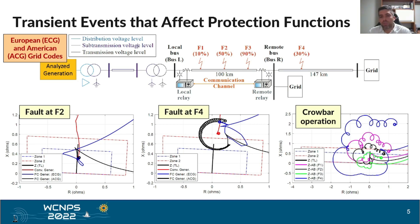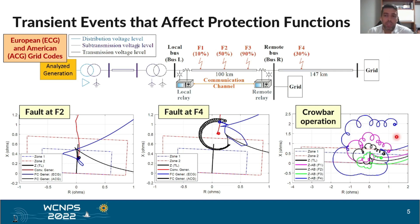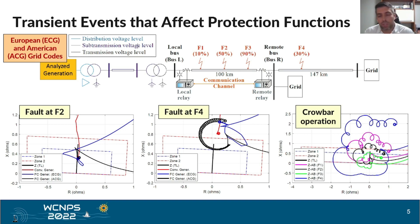The same conclusion can be drawn if we consider a crowbar operation in a Type 3 wind power generation. Again, we can see some oscillations in the apparent impedance trajectory calculated by the distance relay, which could pose problems for protection performance. These events are transient in nature and cannot be represented in phasor simulations.